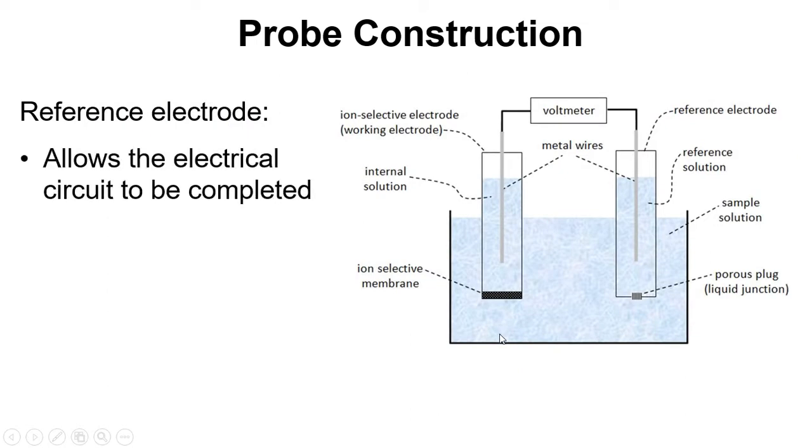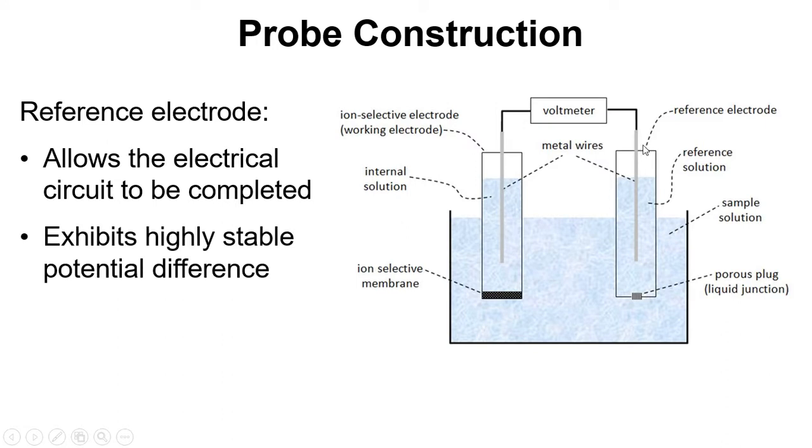In terms of the reference electrode, this allows the electrical circuit to be completed. So in order to measure the voltage with this voltmeter we need a complete circuit to be made. And the potential difference between the wire here and the solution is meant to be highly stable and constant over time.